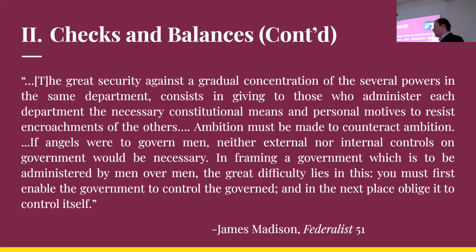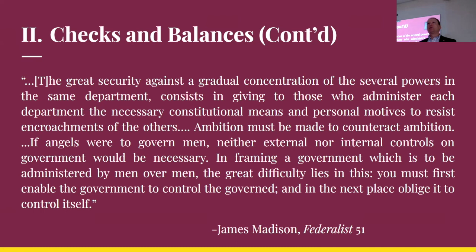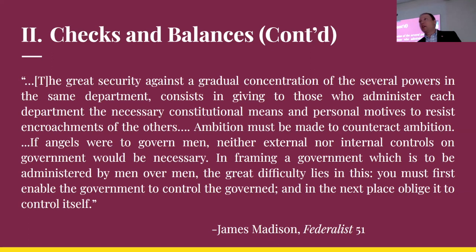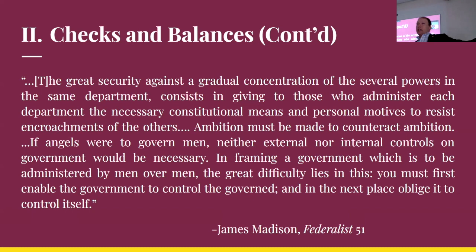Madison says you must first enable the government to control the governed — give the government sufficient power to regulate society for the sake of freedom — and then oblige the government to control itself, with built-in self-control mechanisms. Critics of the constitution originally said the powers of government are not separated enough, there's too much mingling. Madison says there's a point to that: checks and balances for the sake of separation of powers, and separation of powers for the sake of freedom — keeping government under control. That is the end goal of our constitutional government.